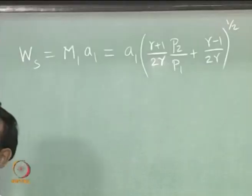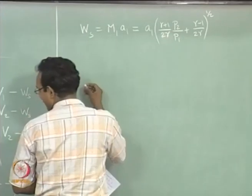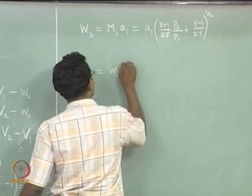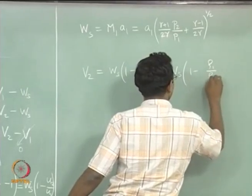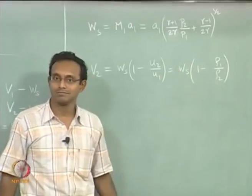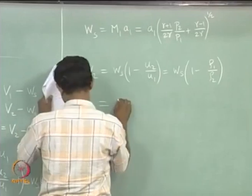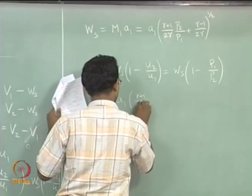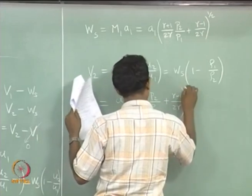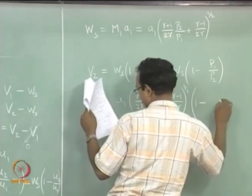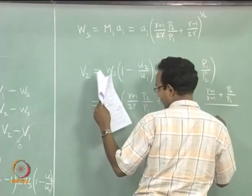Substituting the expressions for WS and ρ1/ρ2 into V2 = WS·(1 − ρ1/ρ2), we obtain V2 as a function of P2/P1 and A1.